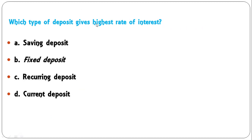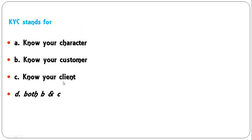Which type of deposit gives the highest rate of interest? Options: saving deposit, fixed deposit, recurring deposit, or current deposit? If you deposit your money for a fixed long-term period, you will get a high rate of interest. Fixed deposit — B — is the correct answer.